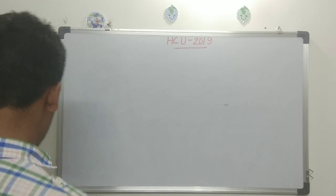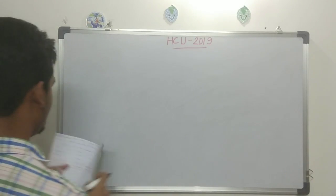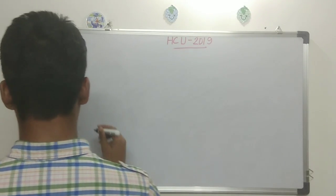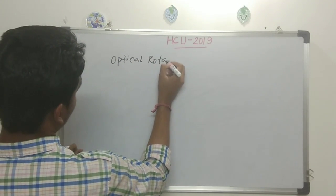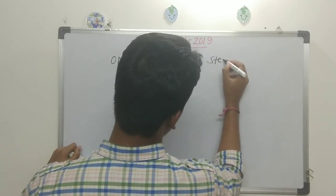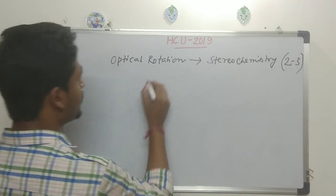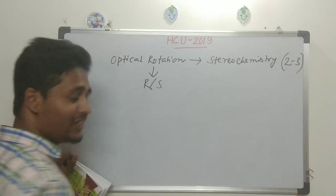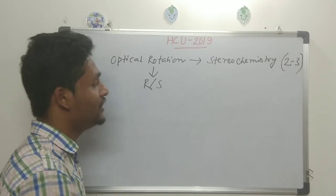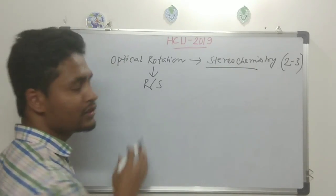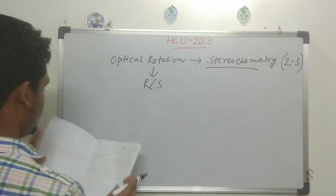Now from organic, one important topic I missed: stereochemistry — specifically optical rotation. Almost 2 to 3 questions every year come from stereochemistry. R-S configuration, enantiomeric excess problems, and basic stereochemistry concepts like planes of symmetry — these are essential. R-S configuration appears every year, so stereochemistry as a whole is a key organic topic.